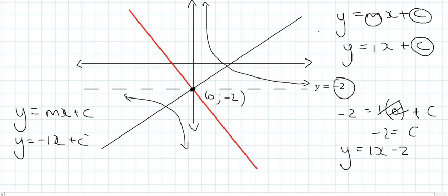To find c, you would do substitution once again, but that line also goes through this point, and so we can substitute minus 2 in the place of y, 0 in the place of x. The c value is also going to be minus 2, and therefore, the red line's equation will be y equals negative 1x minus 2.